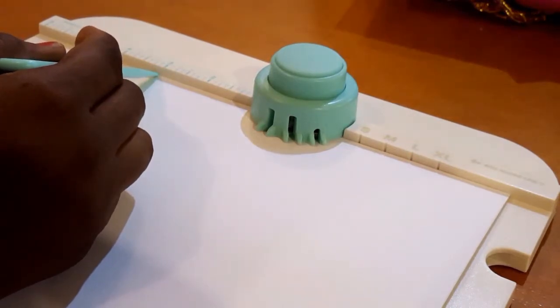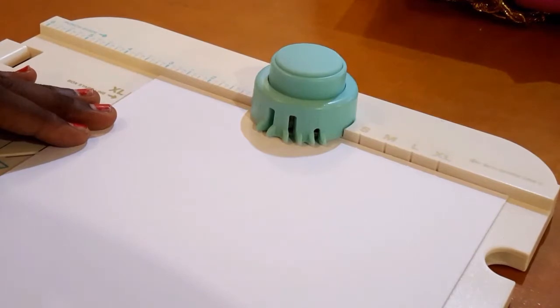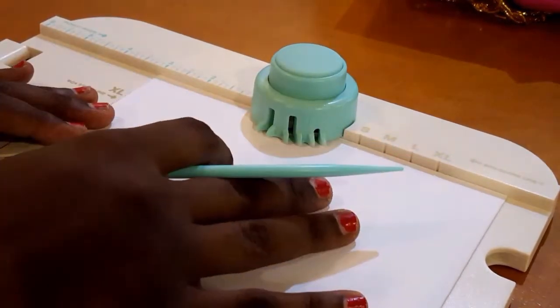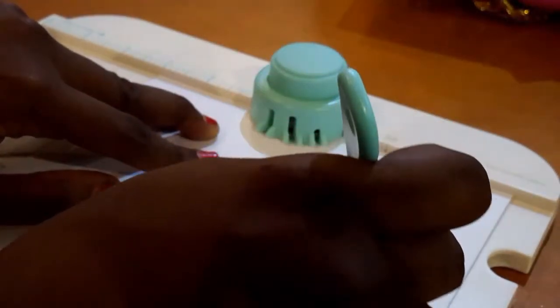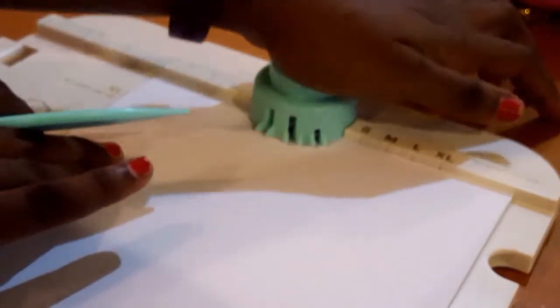And using the scorer I'm just going to do a score line at the envelope line which is marked A. After which I'm just going to punch. Be careful with this punch, it's a bit difficult.